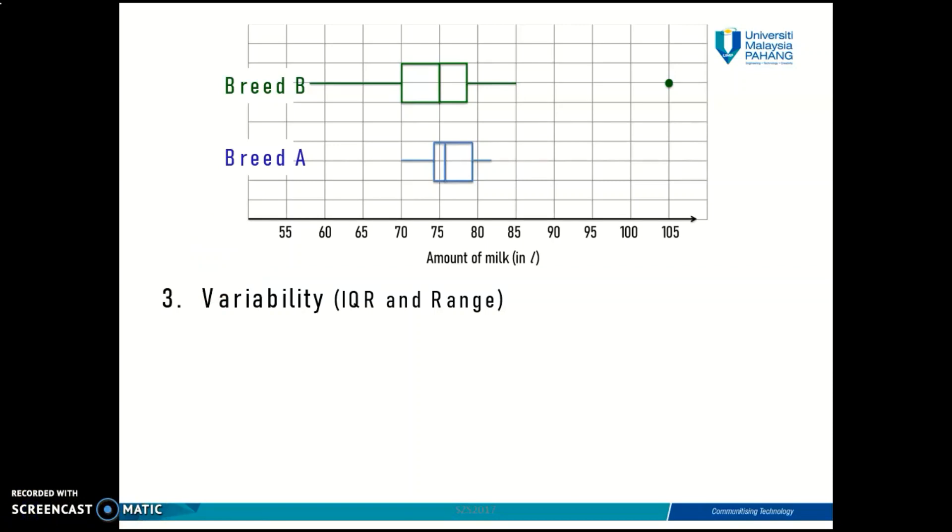In a boxplot, you can't see what is the standard deviation of your data. You can't even see what is the variance of your data.